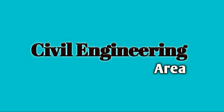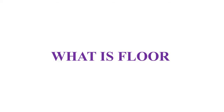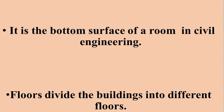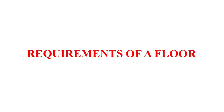Welcome to this video. Today we are discussing what is a floor, the types of floors, and the requirements of floors. A floor is the bottom surface of a room. In civil engineering, floors divide the building into different levels. Wood, stone, metal, etc. can be used as materials for flooring. The floor at the plinth level is known as the ground floor, and floors above are called upper floors.